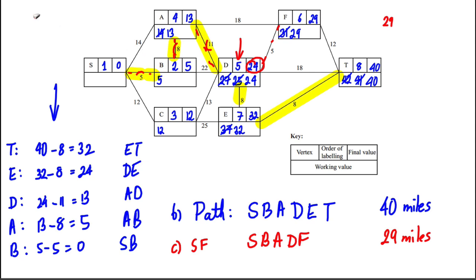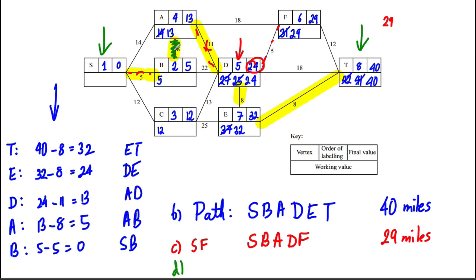We have to avoid arc AB, so that route is completely out of bounds. By trial and error, going all the way around the top gives 44, and all the way around gives 45. Looking at routes through D: going S→B (5) then adding 22 and taking away 8 and 11 would add an extra 3, giving 43.